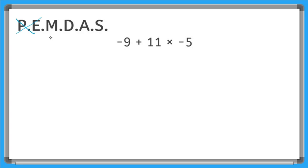Negative 9 plus 11 times negative 5. Remember we are not moving from left to right. We're going in order based on the operation. So first operation we need to find is multiplication. That over here is going to be 11 times negative 5. The answer to 11 times negative 5 is negative 55.